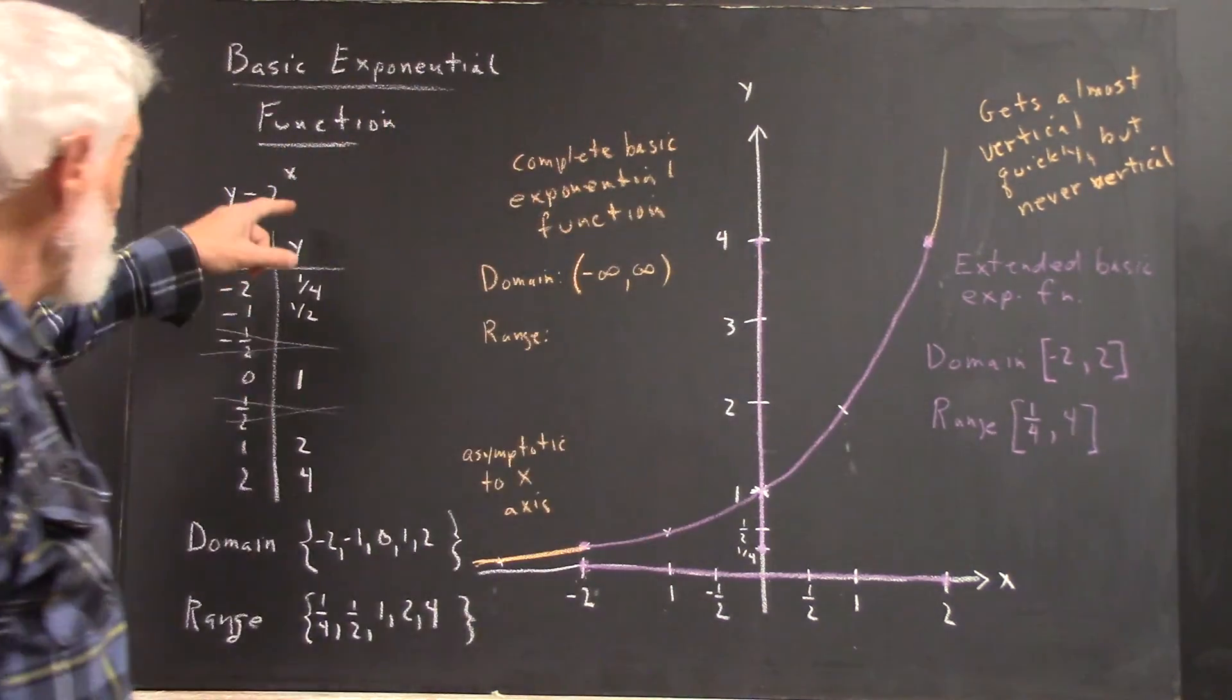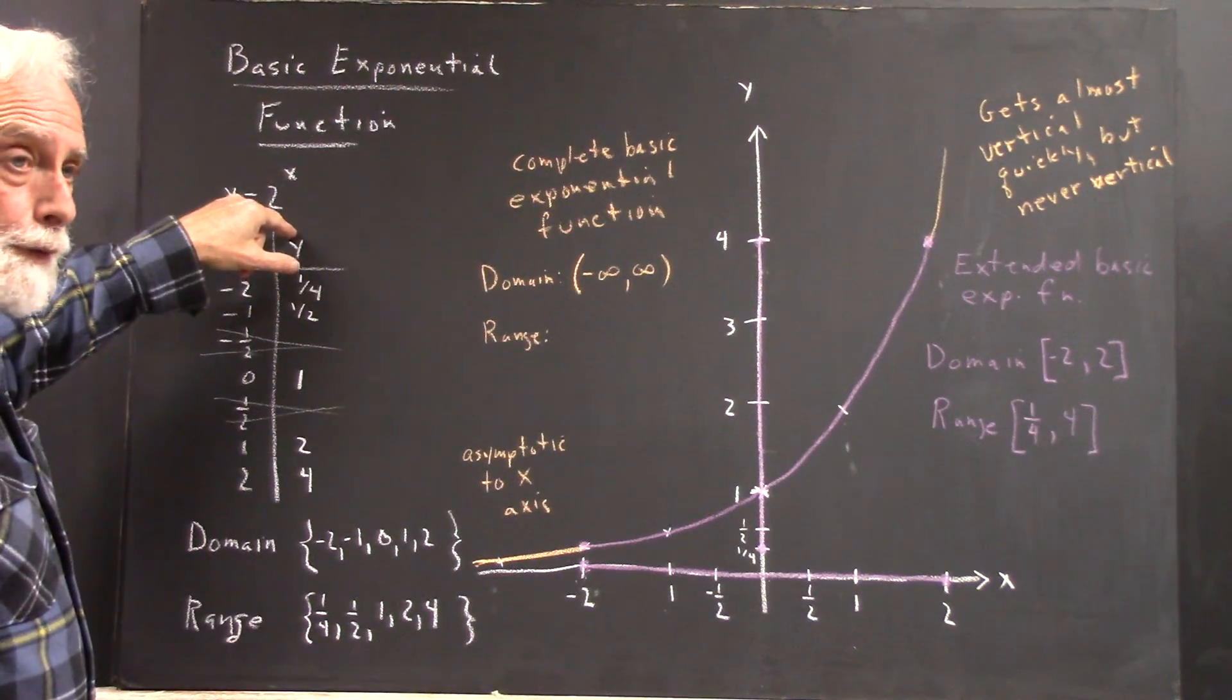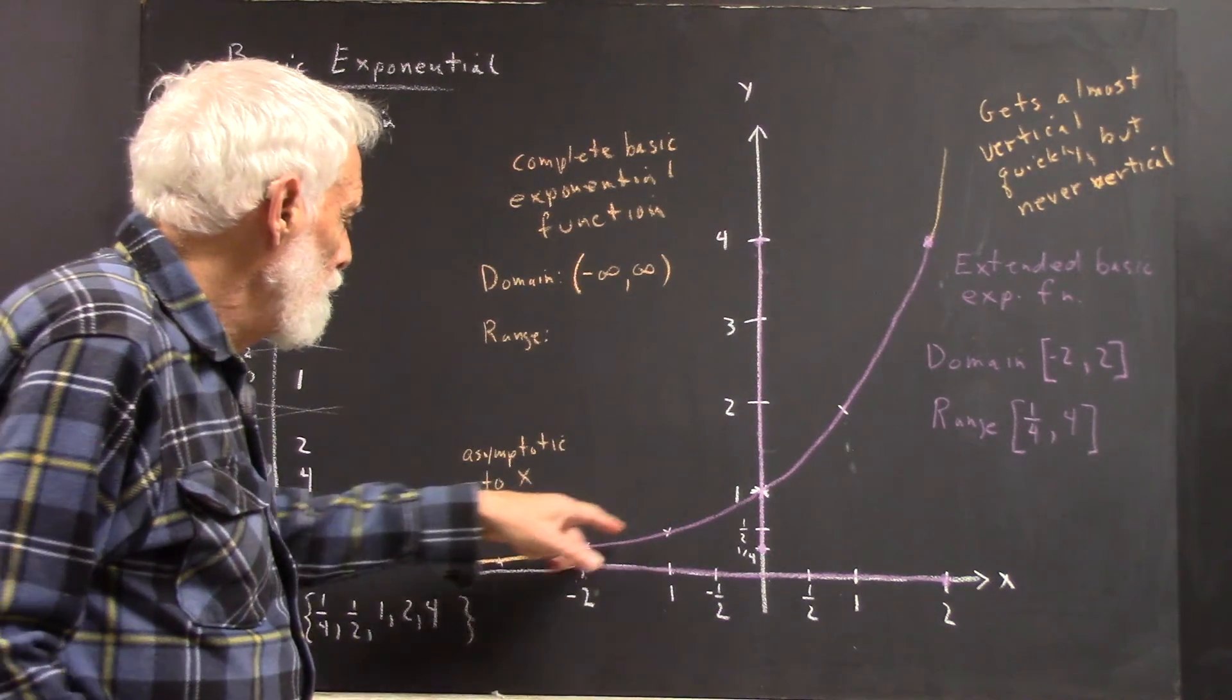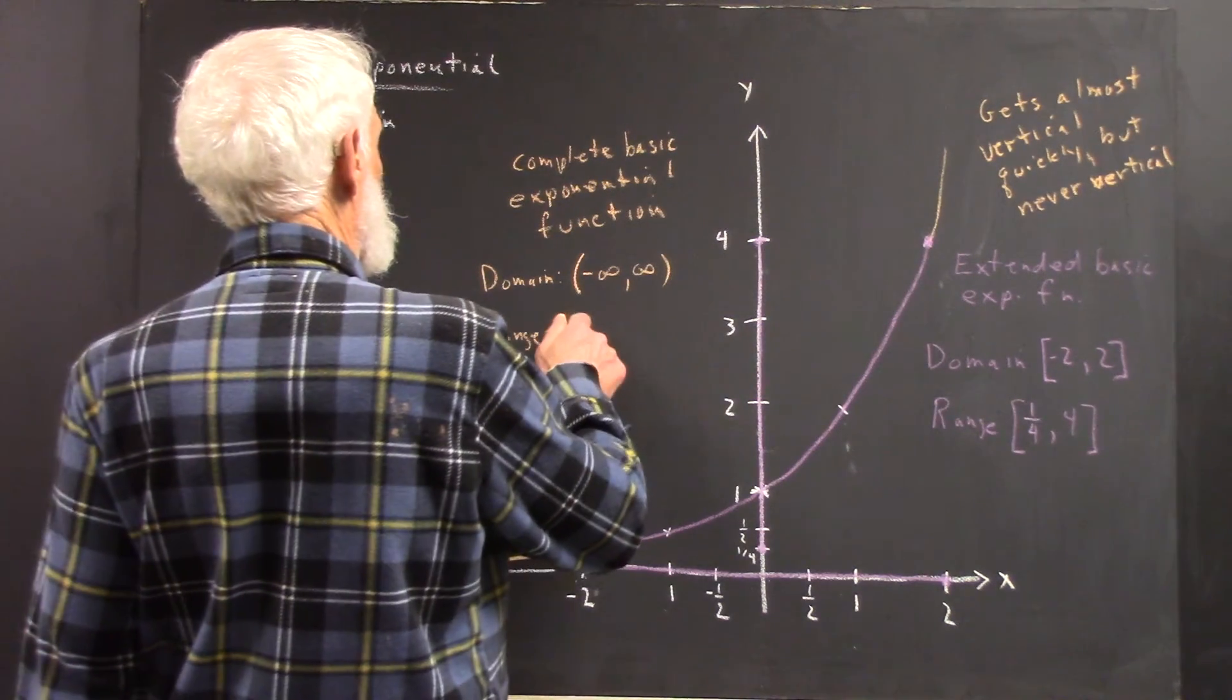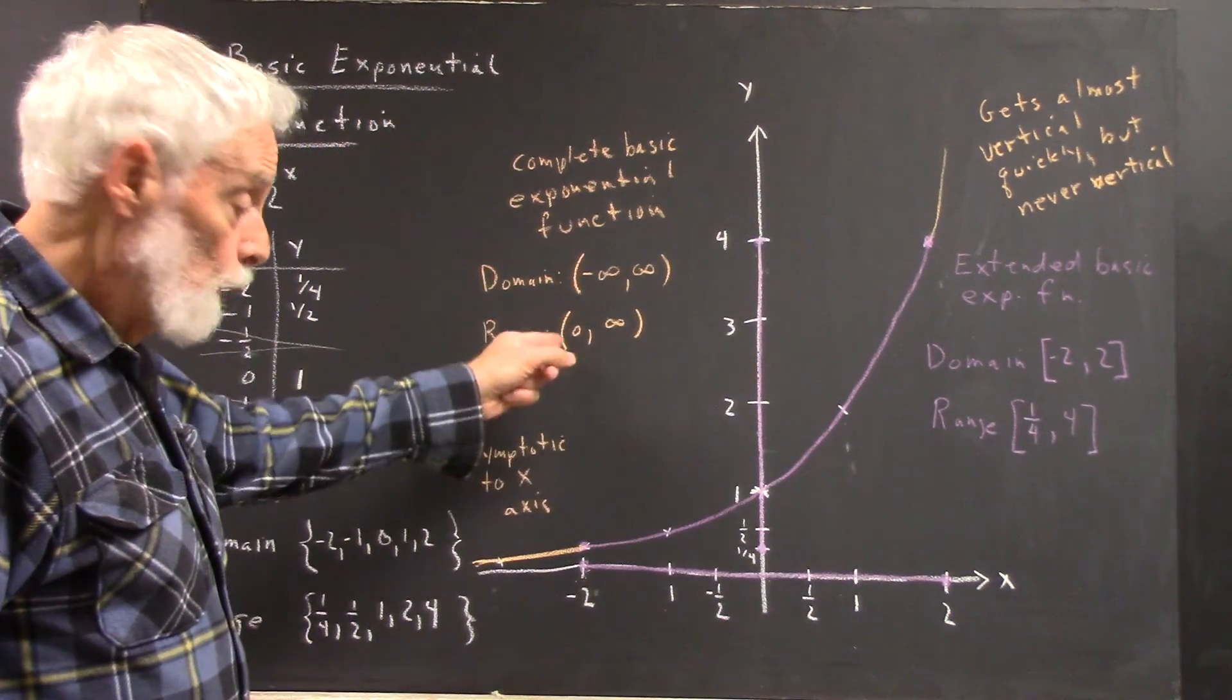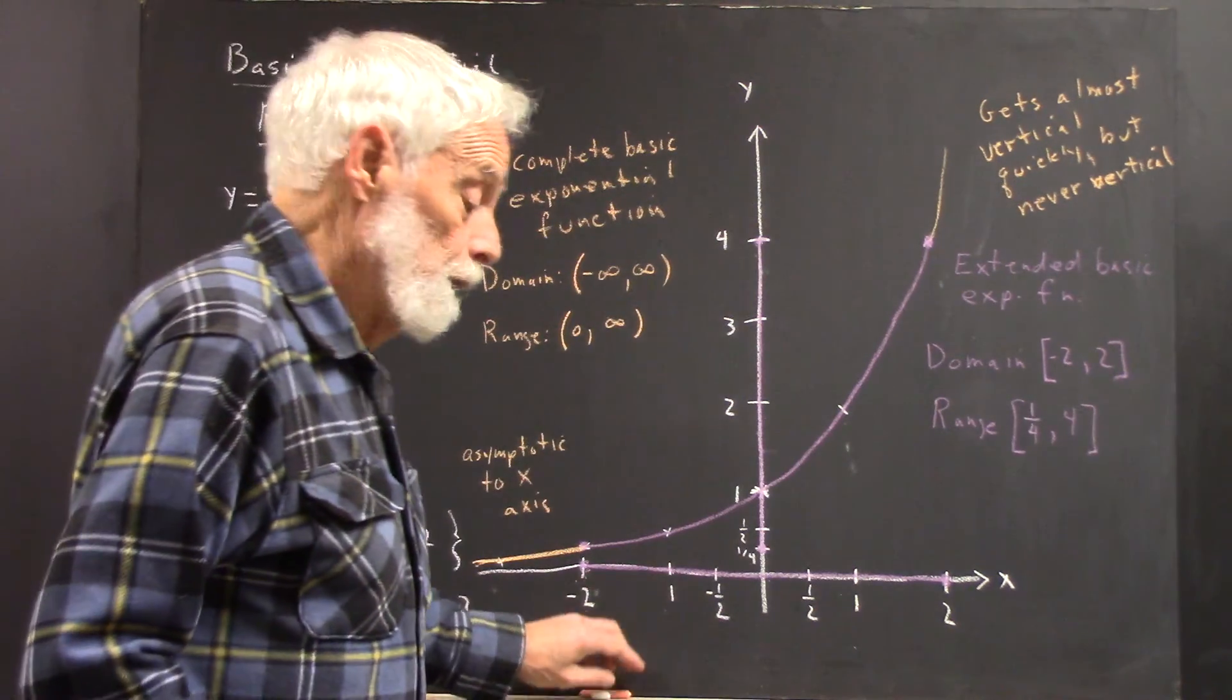There's no limit to how big it can get because the bigger number you substitute for x, the bigger result you're going to get. And the asymptote to the x-axis means you can have any value all the way down to 0 but never reaching 0, meaning that the range goes from 0 to infinity, does not include 0. So we use the open parenthesis rather than the closed bracket. So there is the basic exponential function.